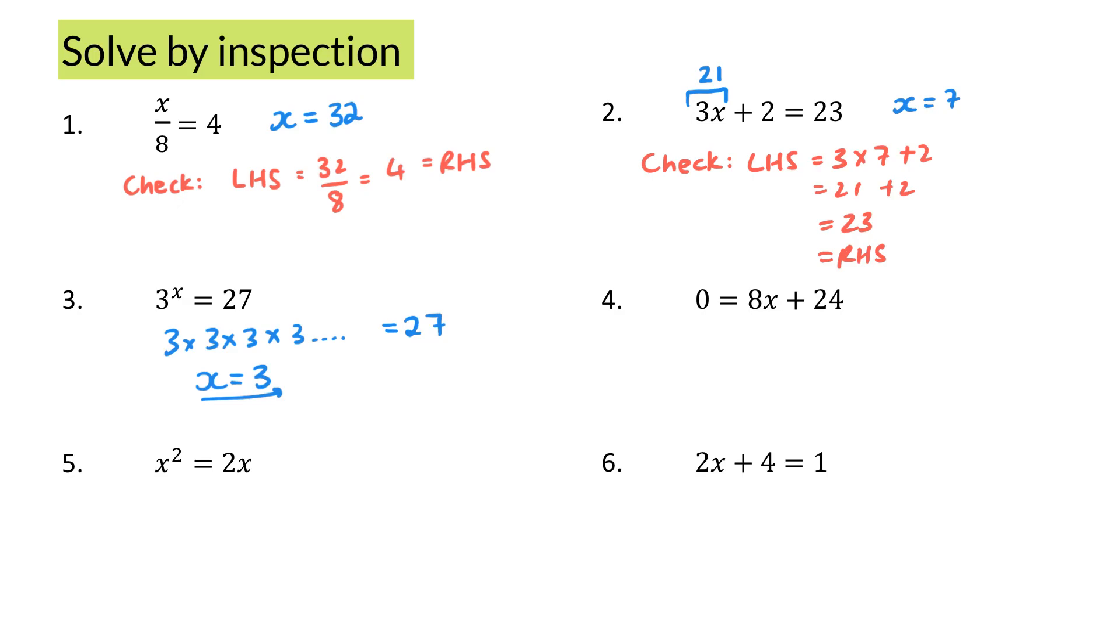The fourth equation says 0 is equal to 8x plus 24. Now 8x is going to need to equal to negative 24, because when I add 24 and subtract 24, I'm going to get 0. So surely, x must be negative 3.